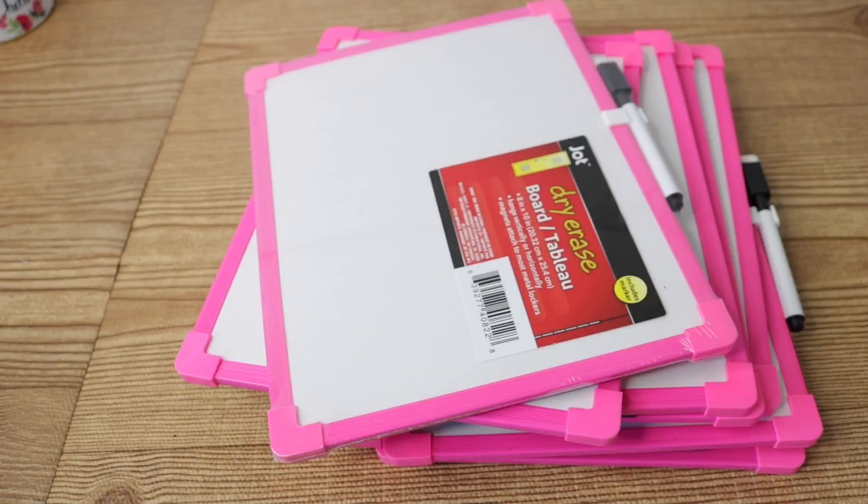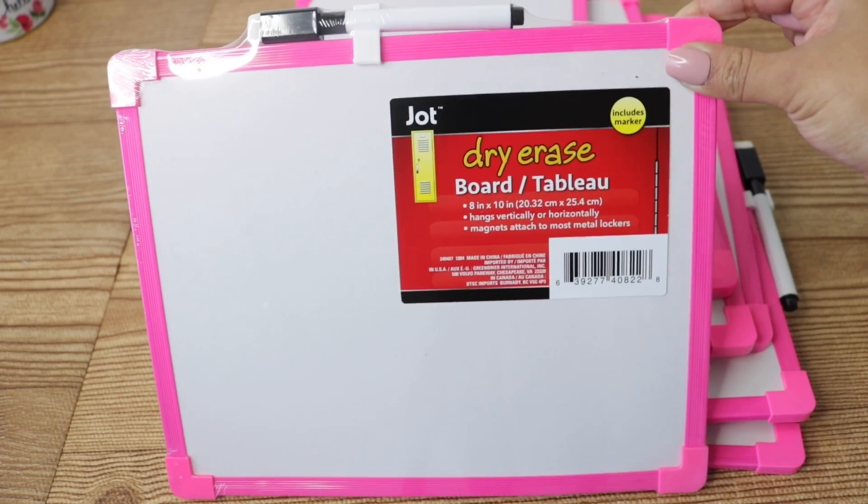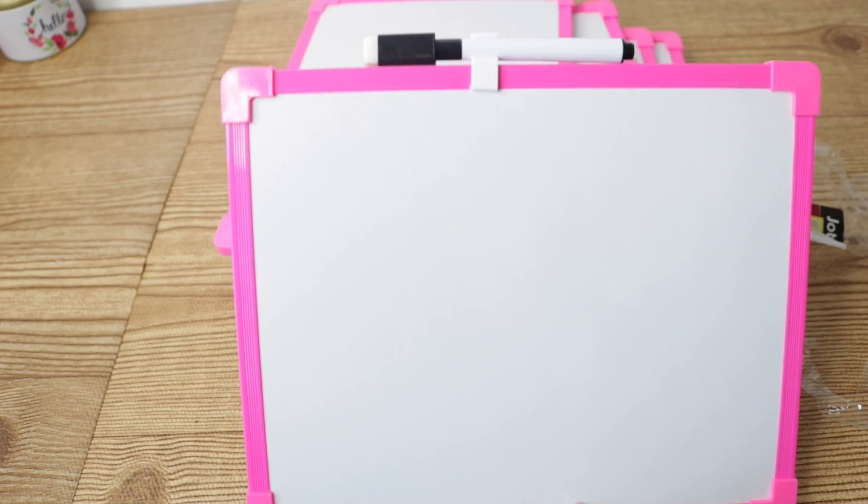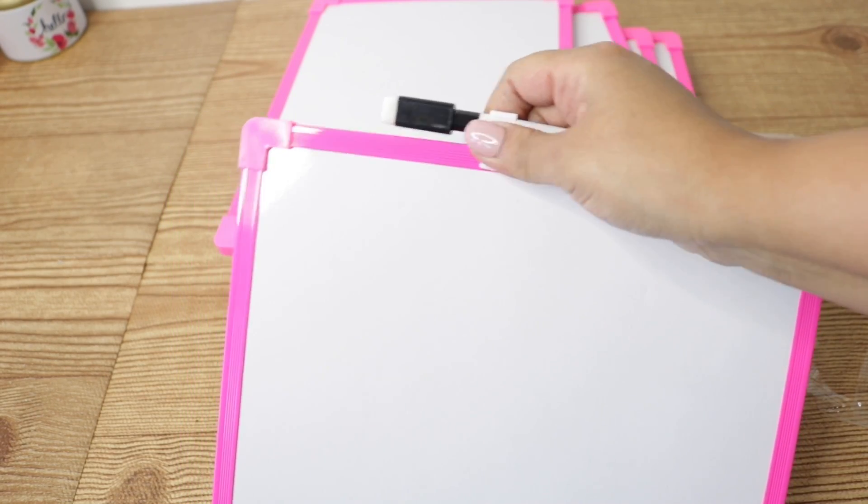For this project I'm going to be using eight of the Dollar Tree dry erase boards. They come with these awesome markers, so you have tons of markers left over, but we are going to be removing them for the tutorial because they're going to be in the way.